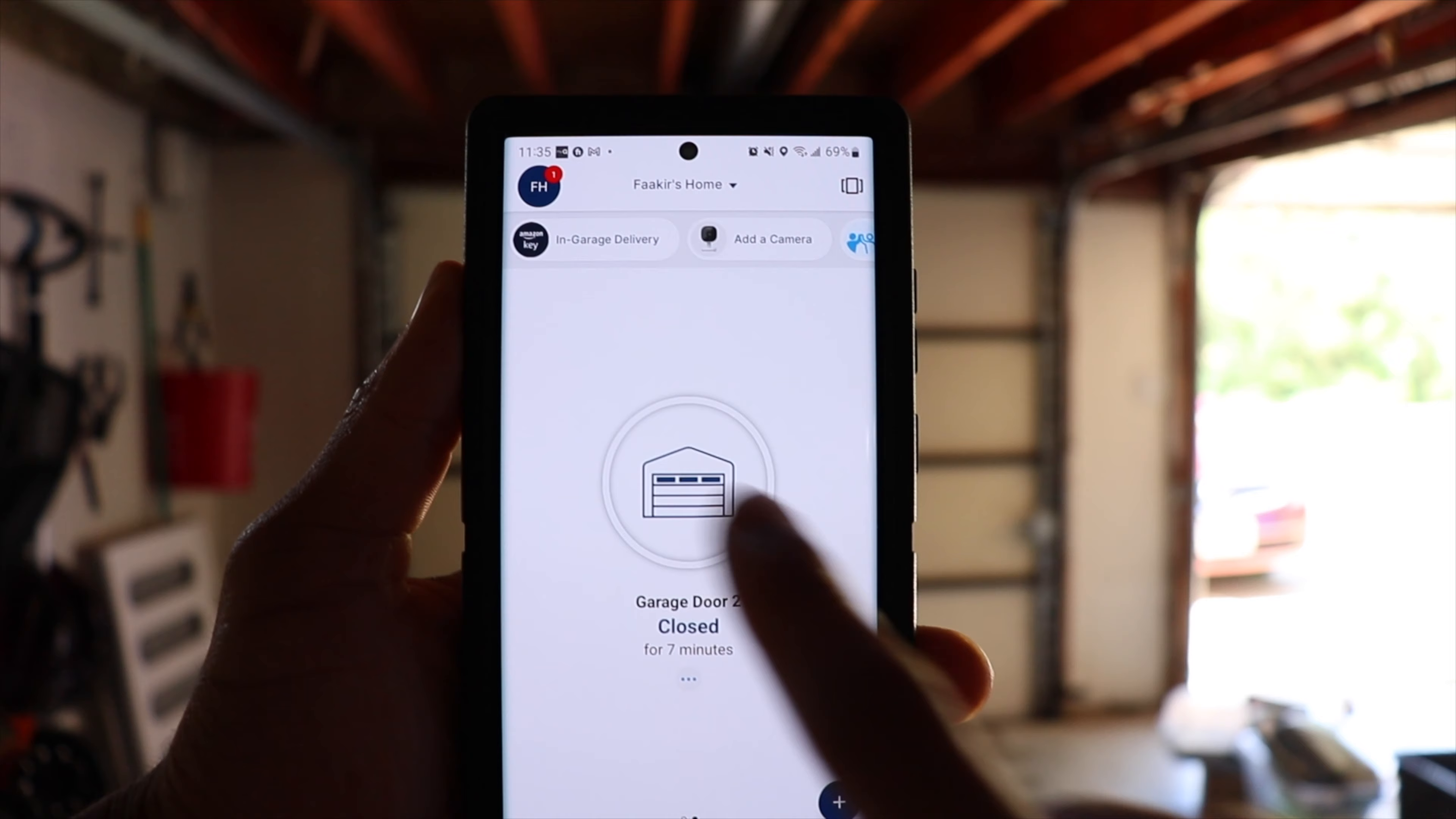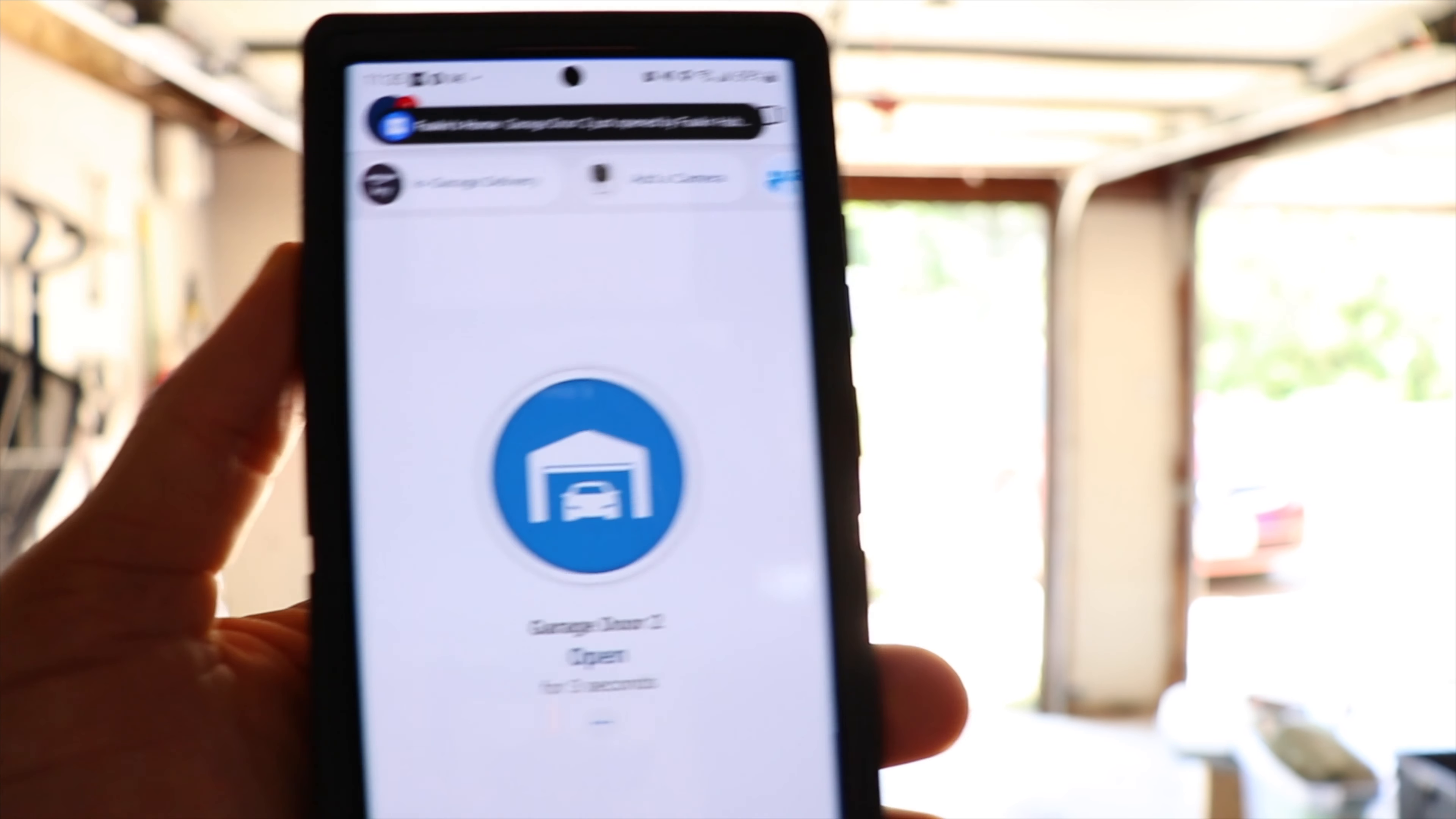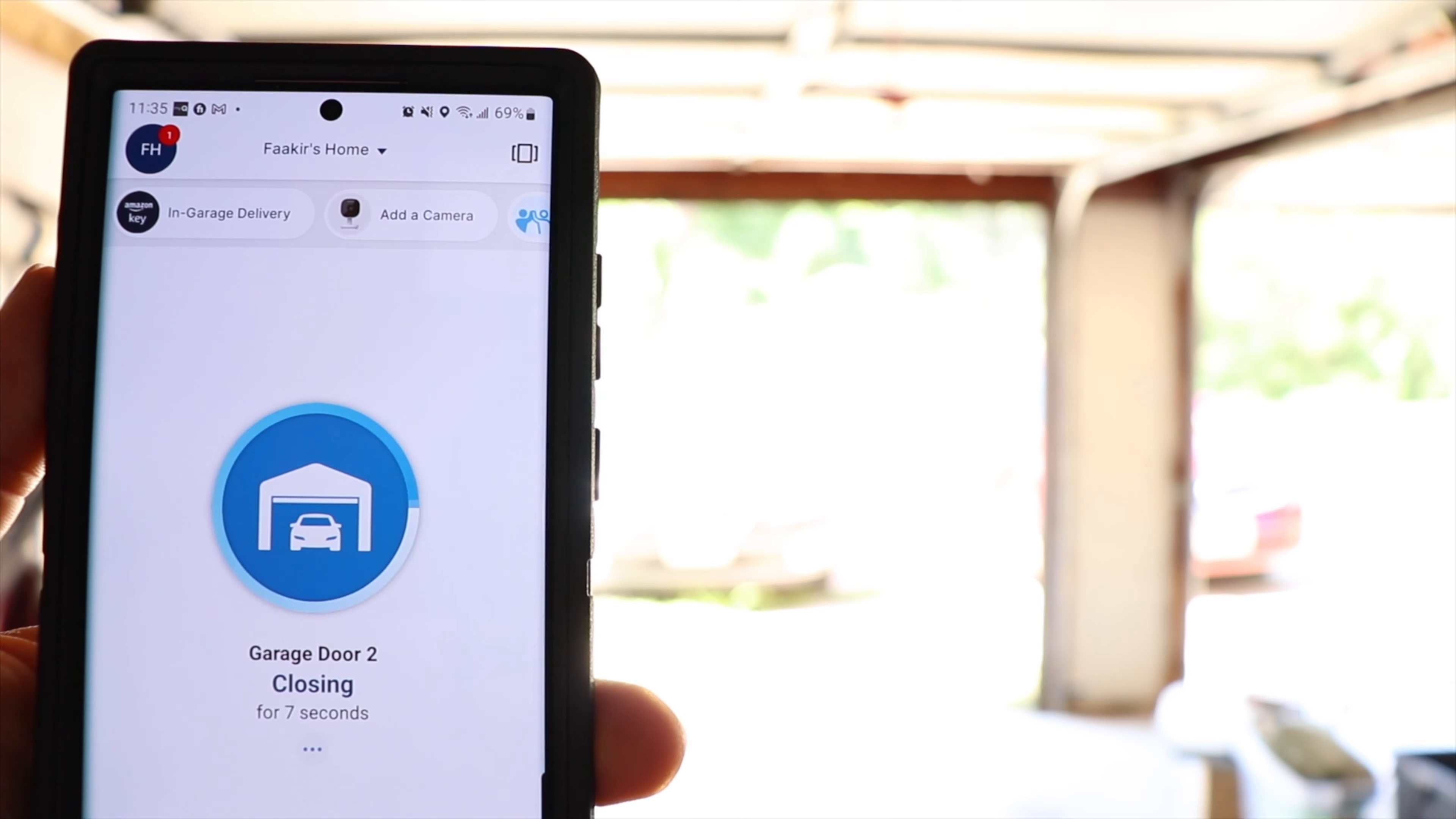So now you're able to use your phone to open and close your garage literally from anywhere. As long as you have a connection or a signal, the app will tell you if the garage is open or if it's closed. And it'll even tell you how long it's been open or closed. So this is really helpful if you're that person that frequently forgets to close your garage. And then whenever you use the app to close your garage, it'll beep for a few seconds, just as a warning in case anybody happens to be in the way.